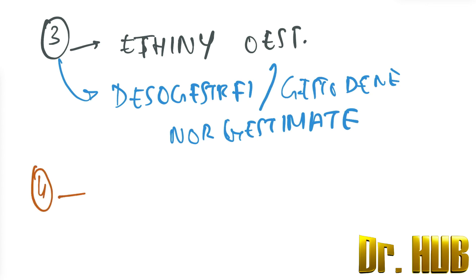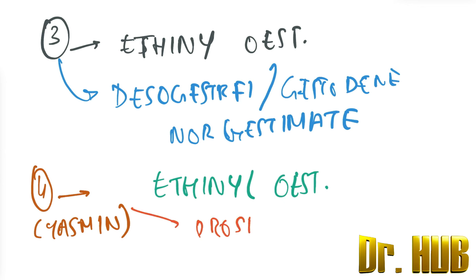Now we move on to the fourth generation, that is Yasmin. The estrogen here is ethinyl estradiol, and the progestin includes drospirenone.